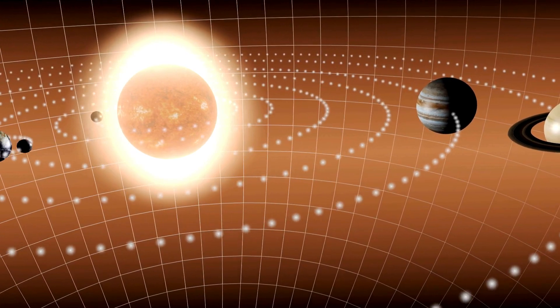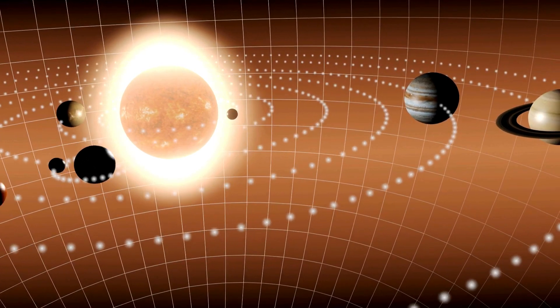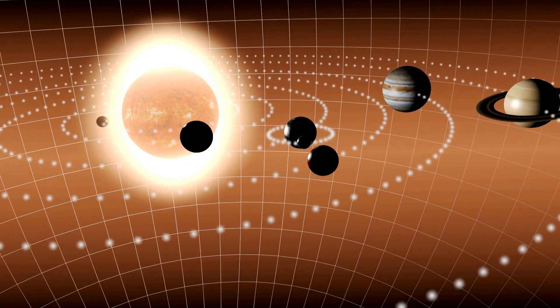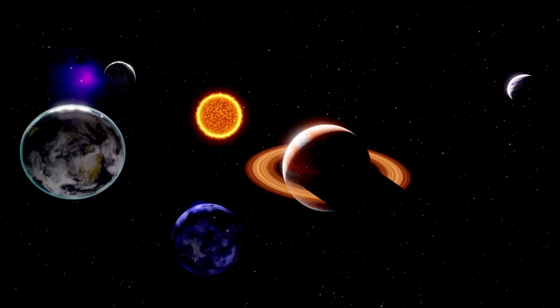At the heart of Ptolemy's model was the belief that Earth stood still, while everything else—the sun, moon, planets, and stars—revolved around it.